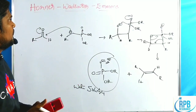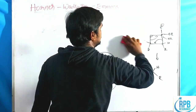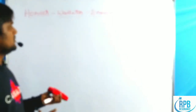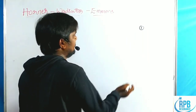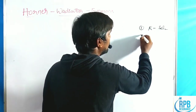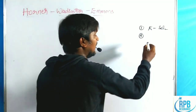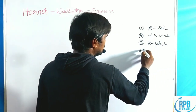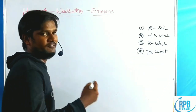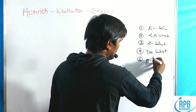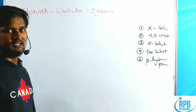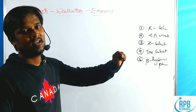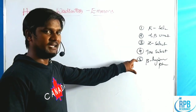Now we will discuss the applications of HWE. We have five categories: first, general preparation with E selectivity; second, alpha-beta unsaturated compound preparation as exceptions; third, Z selectivity; fourth, trisubstituted olefin preparation; fifth, beta-hydroxy phosphonate intermediates, which give two types of diastereomers — both giving different stereospecific reactions. We will discuss these five categories one by one.